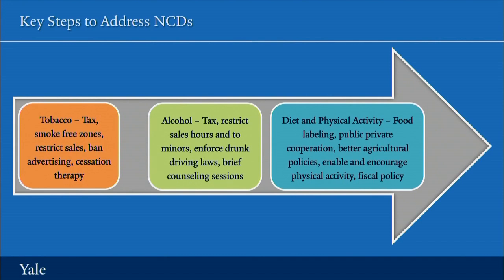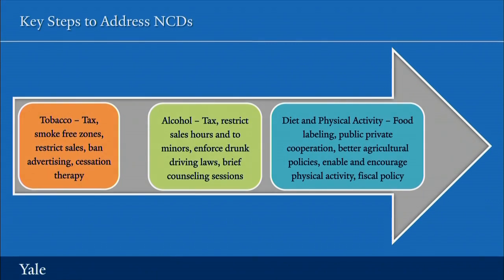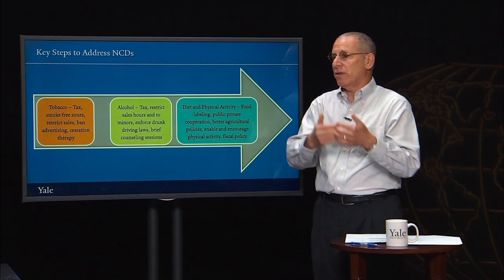For diet and physical activity, we don't have very many examples of large-scale successes in populations changing their diets, their physical activity, and maintaining a more healthy weight, which is so essential to preventing the onset of non-communicable diseases including diabetes and heart disease. But we do know there have been some successes and continued promise through efforts at food labeling, public and private cooperation to reduce salt, sugar, and fats in some foods, and better agricultural policies so that countries more explicitly focus on not subsidizing foodstuffs that are not good for us, and if subsidizing, doing so in ways that encourage rather than discourage healthy diets.